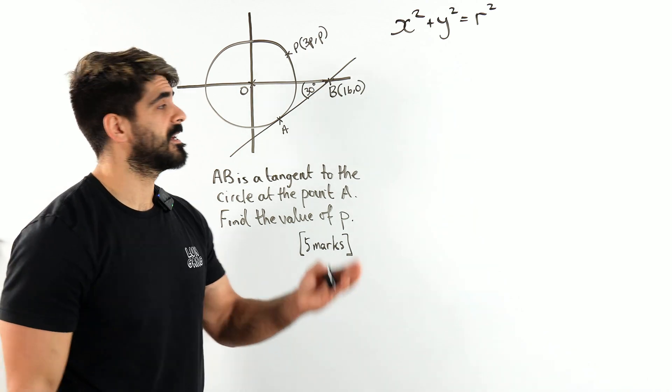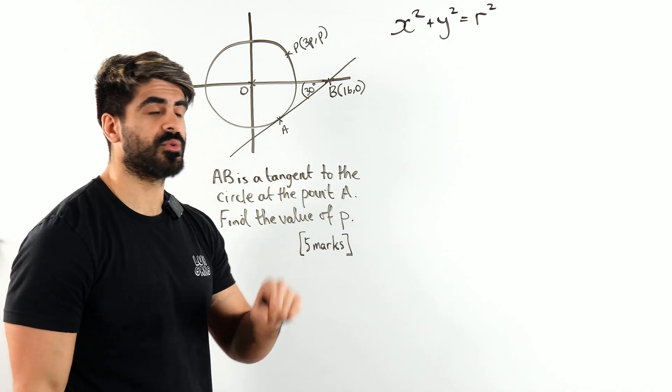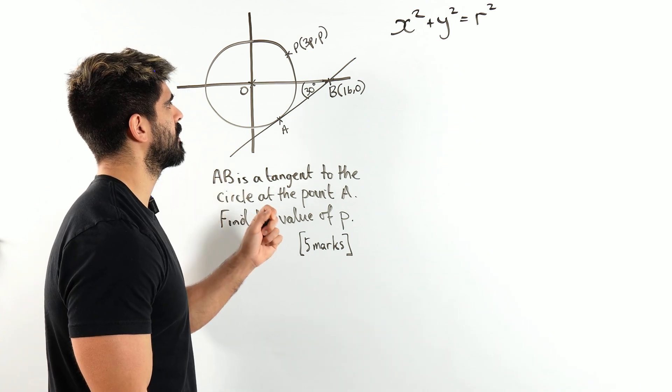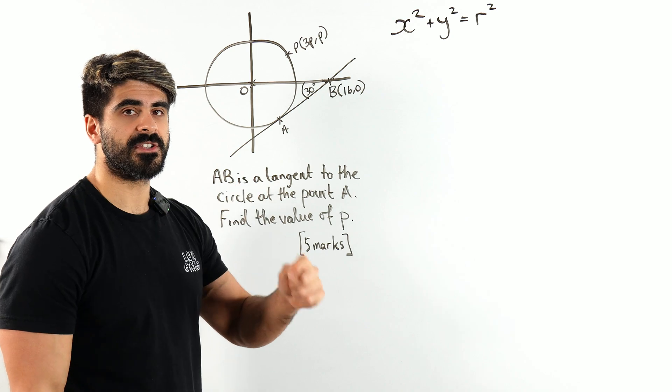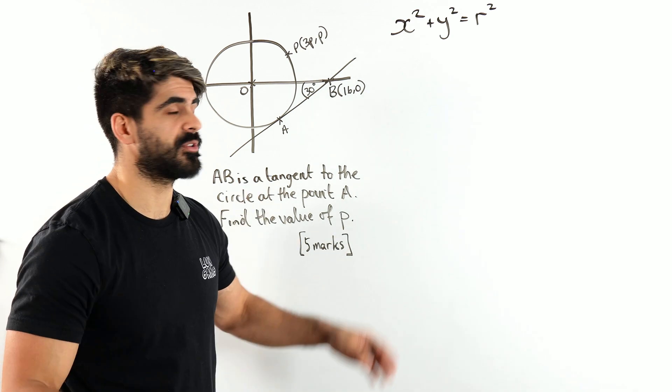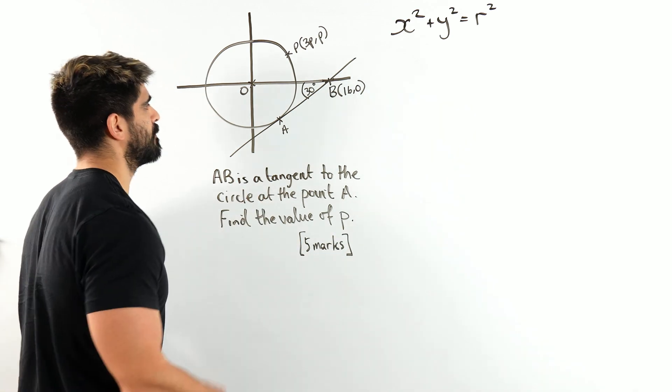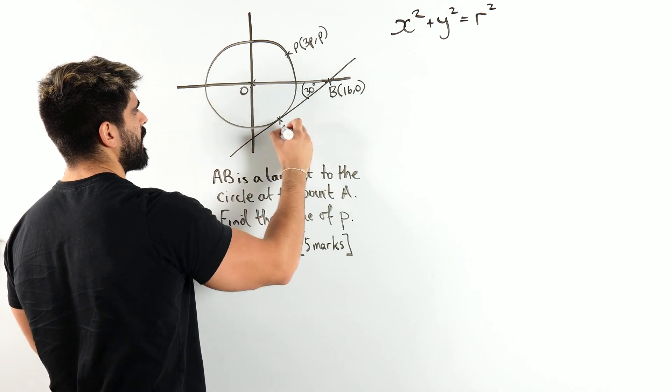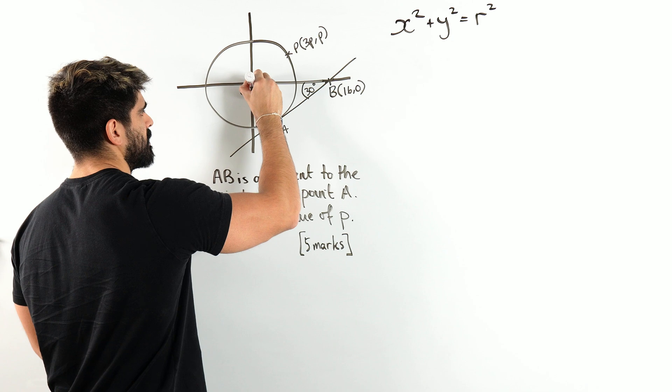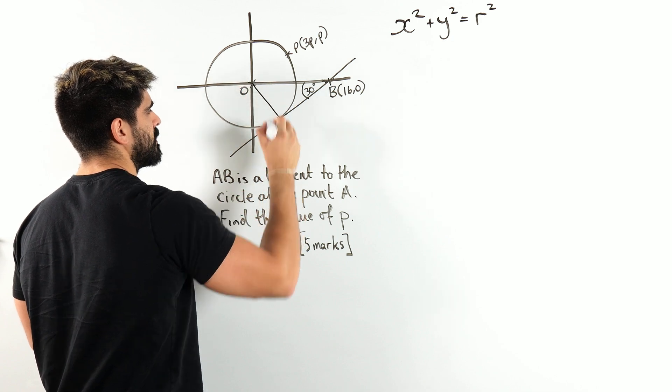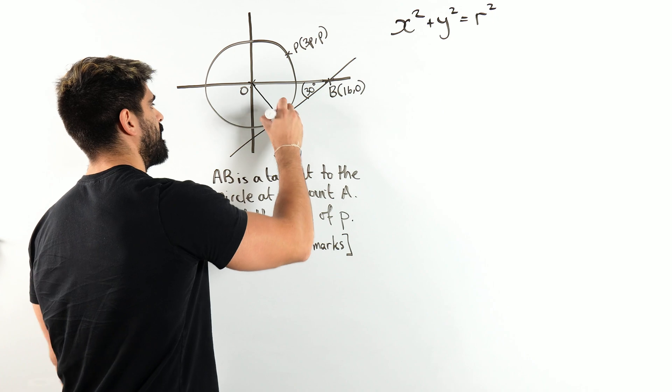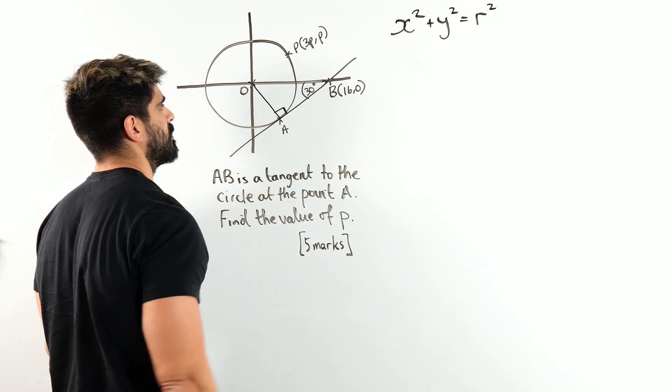Now whenever we see tangents and circles, you should only be thinking about one thing: tangent meets radius at 90 degrees, one of our circle theorems. So immediately, you should be drawing a line connecting the center and the point at which the tangent meets. That is 90 degrees.